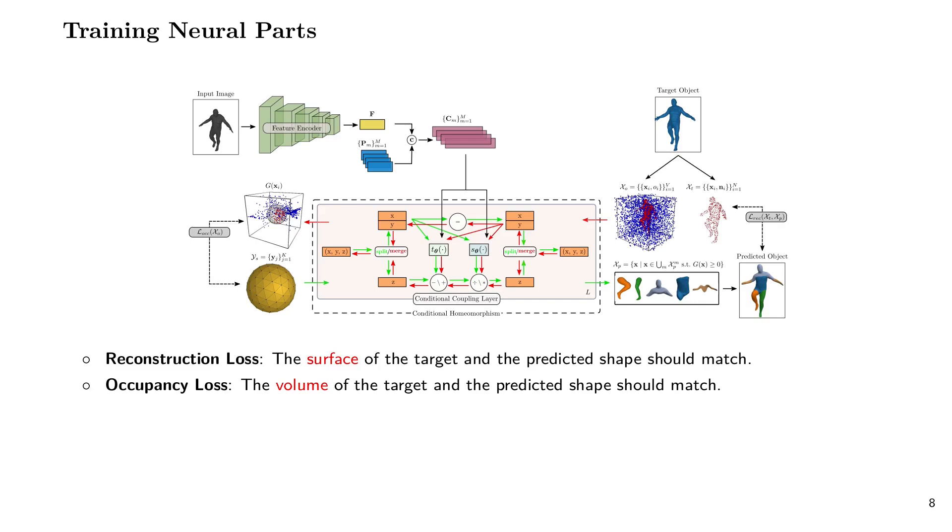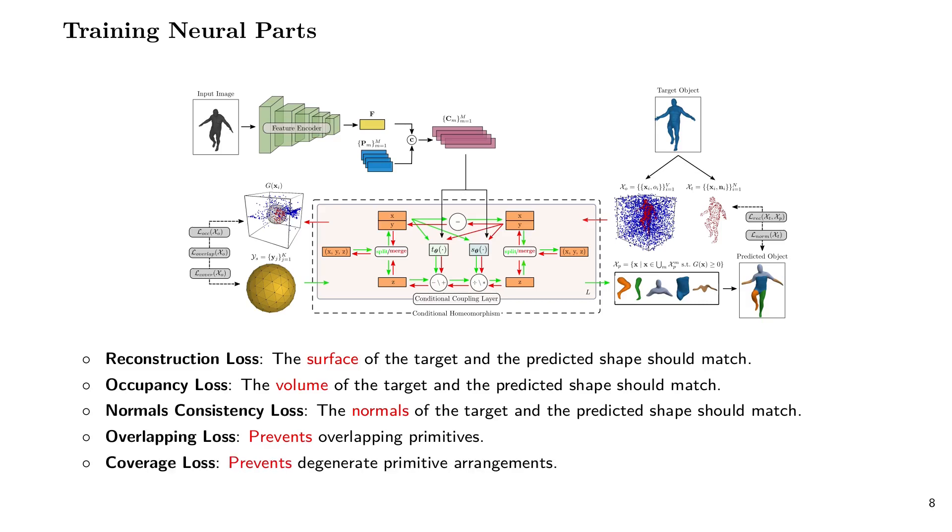Moreover, we define three auxiliary losses that enforce, firstly, that the orientation of the normals of the predicted and the target shape is consistent, secondly, that primitives do not overlap, which ensures that they describe different parts of the object, and finally, a loss that prevents degenerate primitive arrangements where some primitives are very small and do not contribute to the reconstruction.